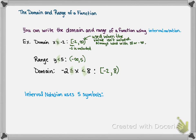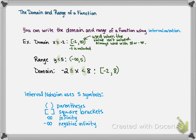Interval notation uses about 5 symbols: the curved parenthesis, the squared-off brackets — and they can be mixed and matched because you could have one of each — the infinity symbol, the negative infinity symbol, and sometimes you'll see union, which is like an 'or,' where we've got different parts of domains and ranges. And of course, numbers.